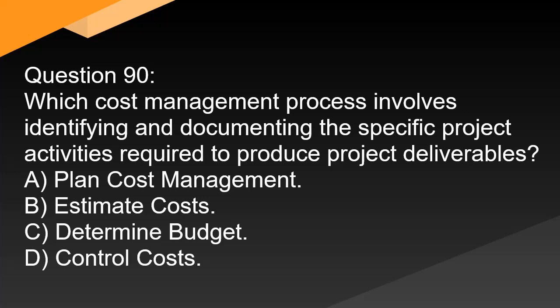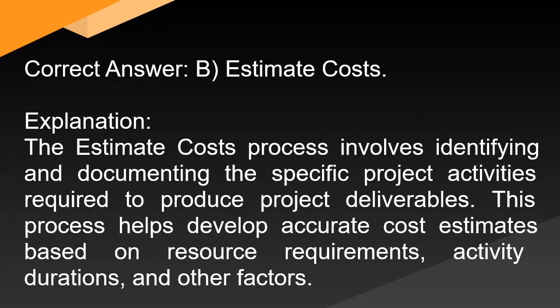Question 90: Which cost management process involves identifying and documenting the specific project activities required to produce project deliverables? A. Plan cost management. B. Estimate costs. C. Determine budget. D. Control costs. Correct answer: B. Estimate costs. Explanation: The estimate costs process involves identifying and documenting the specific project activities required to produce project deliverables. This process helps develop accurate cost estimates based on resource requirements, activity durations, and other factors.